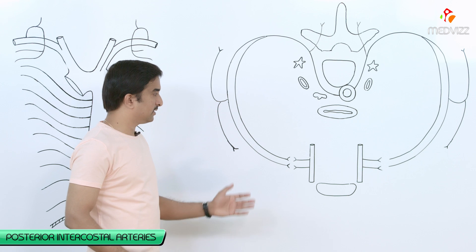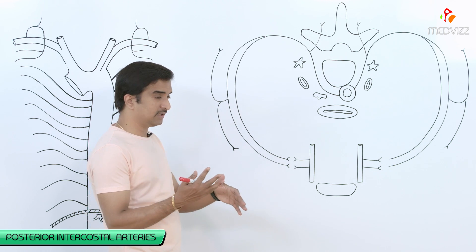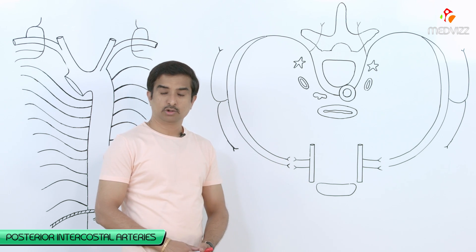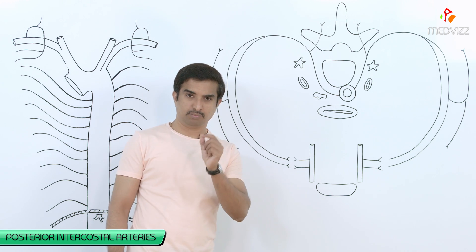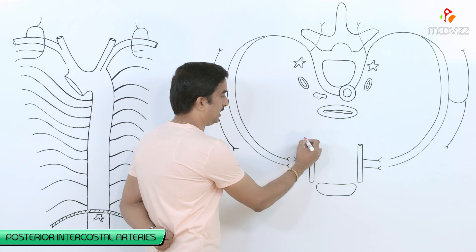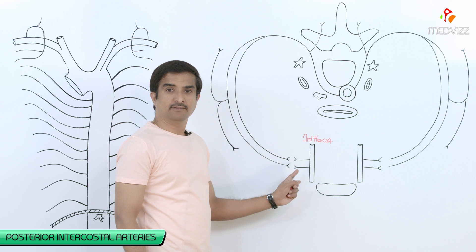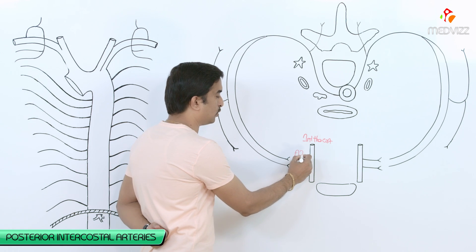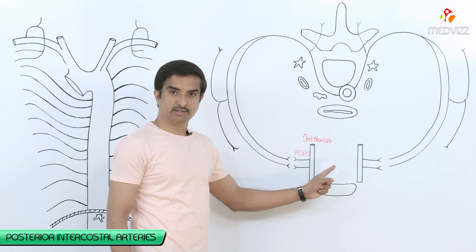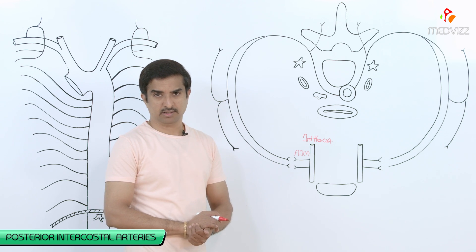In this image the anterior aspect shows the sternum at the front, and behind it you can see the internal thoracic artery. The internal thoracic artery is a branch of the first part of the subclavian artery. This internal thoracic artery gives off branches called anterior intercostal arteries.